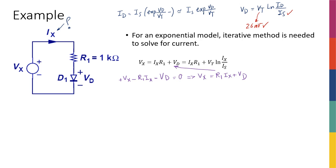The next step would be replacing vd from this equation with vt ln of id over is. Well, since the current flowing through the diode is ix, I'm going to write ix instead of id. So I have a relationship between current and voltage. If I want to write the relationship it's going to be vx is equal to ix R1 plus vt ln of ix over is.